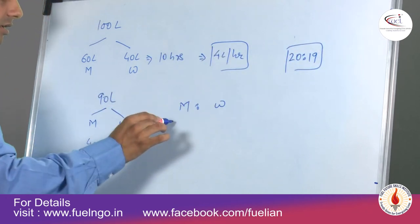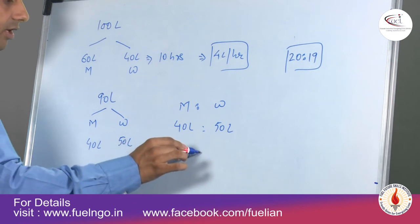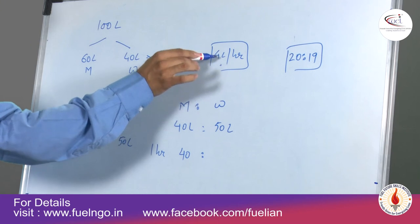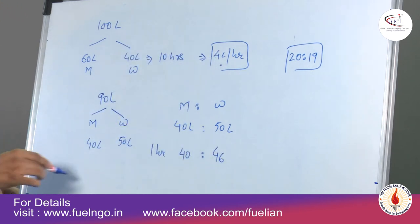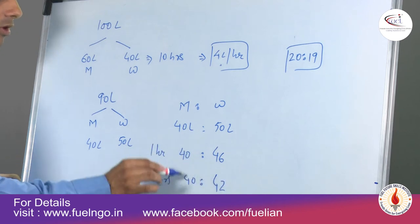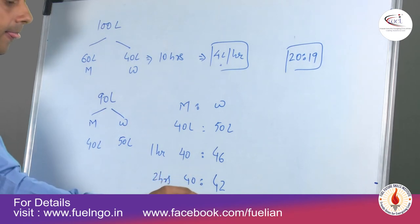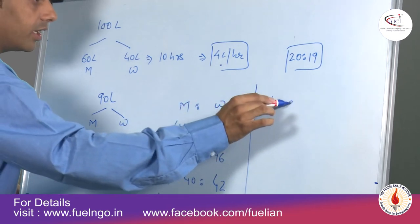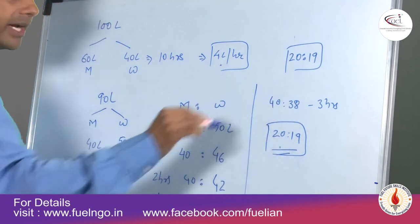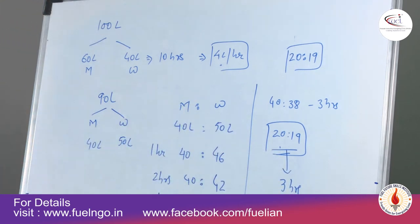Milk remains as it is since we want to improve the concentration, so only water is drained out. After 1 hour, water reduces by 4 litres: 40 to 46 gives ratio 20 to 23 — not what we want. After 2 hours: 40 to 42 gives 20 to 21 — still not right. After 3 hours: 40 to 38 gives 20 to 19. So the machine must operate for 3 hours.